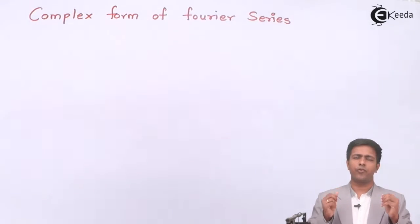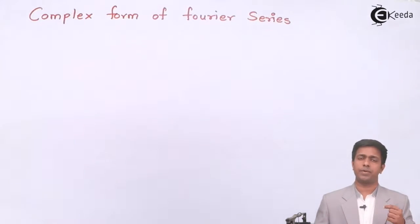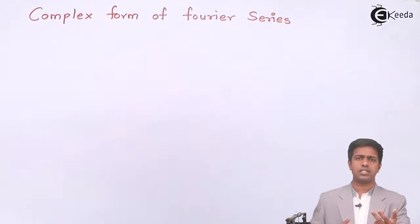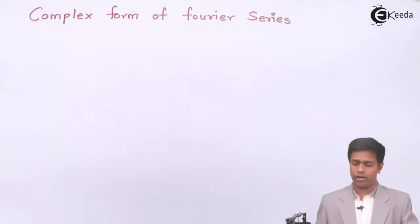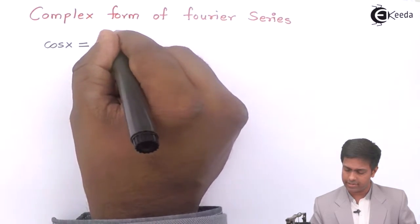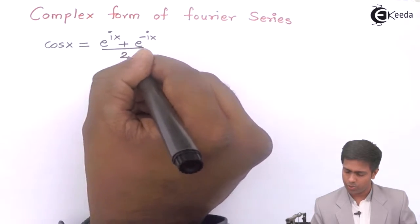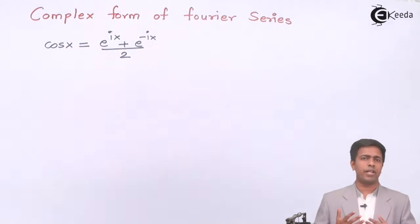We know the Fourier series formula: f(x) = a₀ + summation of aₙ cos(nπx/l) + summation of bₙ sin(nπx/l). Now in that Fourier series, if you replace cos and sine using Euler's formula — where cos(x) = (e^(ix) + e^(−ix)) / 2 — then we get the complex form of Fourier series.